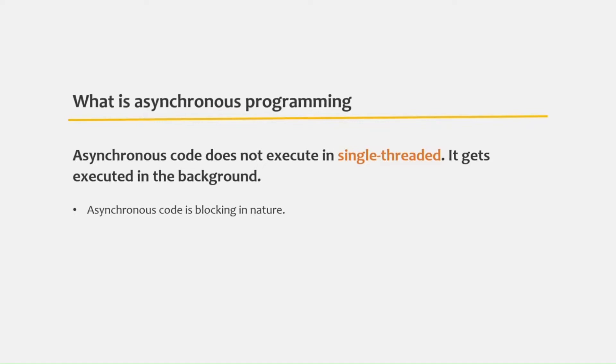Using asynchronous programming, we can perform time-consuming network requests without blocking the main thread. An asynchronous code will return us some data after some time, so we need to wait for that data. And once the data is available, we can utilize it in our code. To handle that asynchronous data, we use either a promise or an observable.